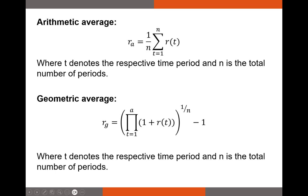Later periods in a time series are typically more heavily weighted in the geometric average return. To calculate it, we take the product of all (1 + return) values over the time series, raise that to the power of 1 divided by the number of periods n, and subtract one. Let's take a look at an example.